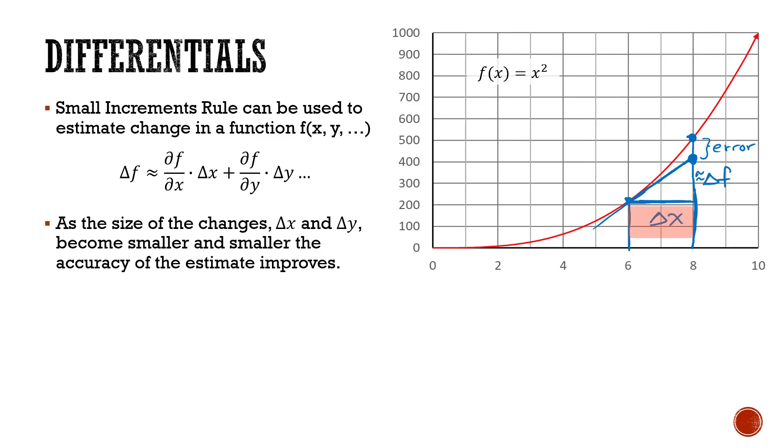For instance, if we were to try to estimate the change from 6 to 7 instead, we would take that same slope, we would estimate this change, and the error here would be much smaller. And as we get this value of change in x to be smaller and smaller, what happens is we get more and more accurate with our estimate.